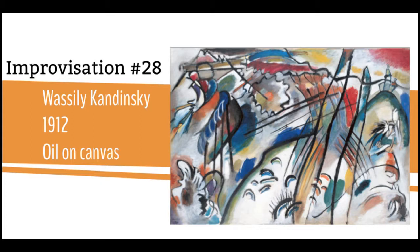Going back to the work on our list: this is Improvisation No. 28, by Vasily Kandinsky — painted in 1912, oil on canvas. This is accepted by most historians as the first non-objective work ever, which is pretty exciting. It's called Improvisation — Kandinsky was even naming his works the way composers would.